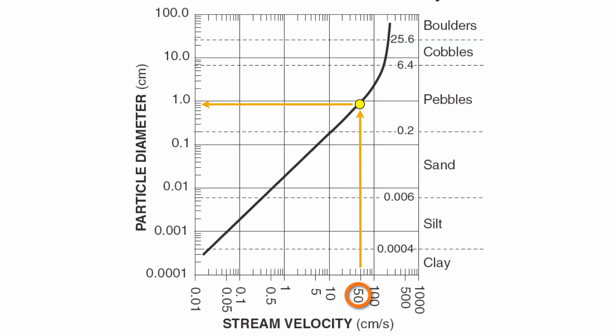You can also be given the diameter. Say, for instance, you have a diameter of 0.01 centimeters. You want to figure out what is the velocity of water needed to move that fragment. Well, you bring it across, hit your reference line, you bring it straight down, about 0.5 centimeters per second. So you can use this in a couple different ways. Make sure you understand the scales. That's going to be the most important on this chart, and we'll talk to you soon.